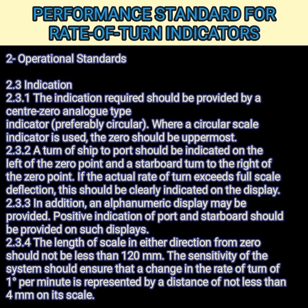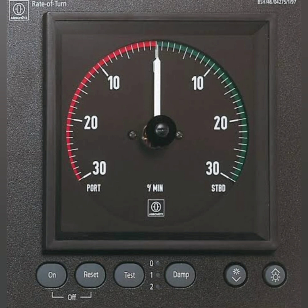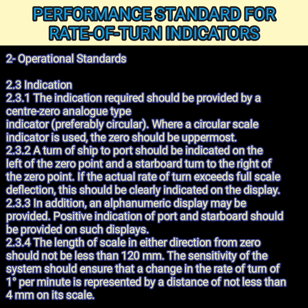The indication required should be provided by a zero-center analog type — so zero is in the center — and the scale should be analog type, preferably circular. A turn to port should be indicated on the left of the zero point, and a starboard turn to the right. If the actual rate of turn exceeds what is marked on the indicator's maximum, it should be positively indicated, usually done with full-scale deflection, so the needle can go further giving a positive indication of higher rate of turn.